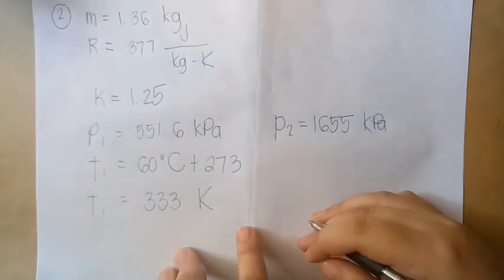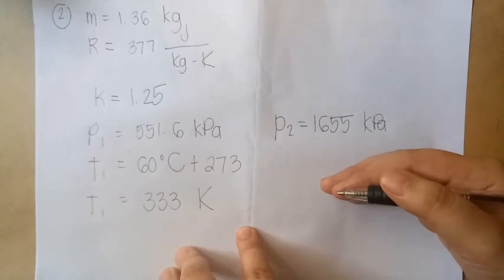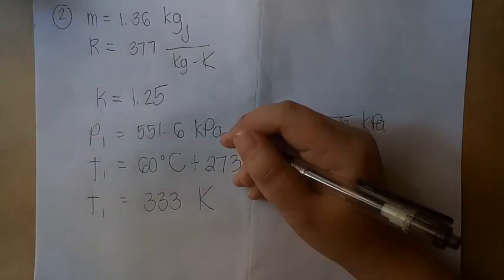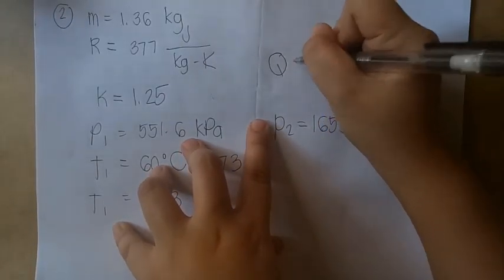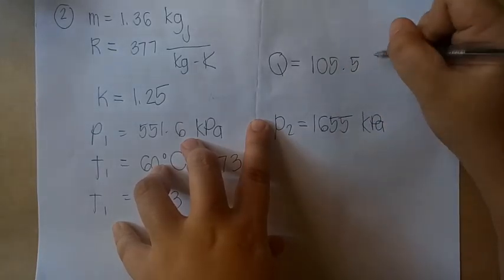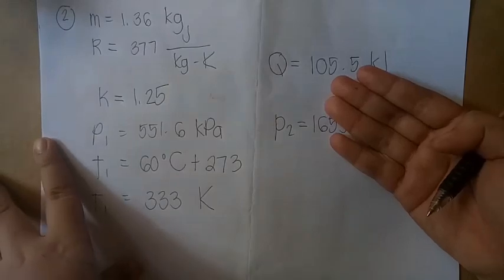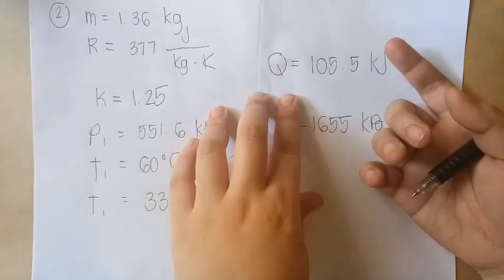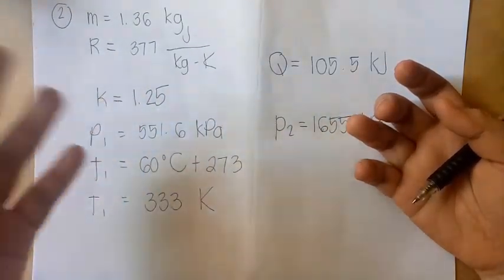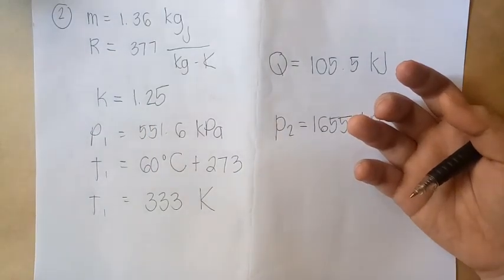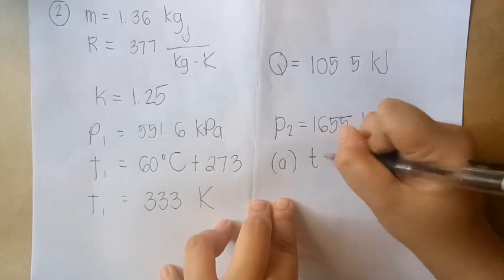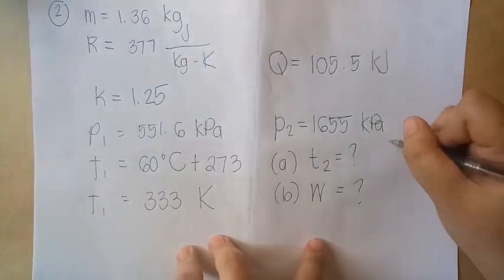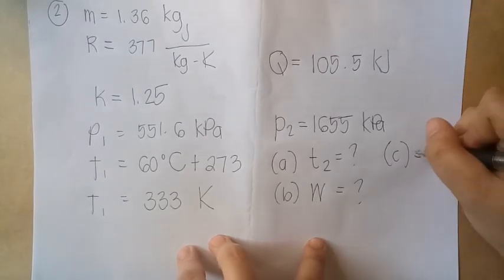During the process the gas is internally stirred and there are also added 105.5 kilojoules of heat. Q equals 105.5 kilojoules. Our Q is positive because it's added heat - when heat is added, absorbed, or gained, Q is positive; when rejected or lost, it's negative. The questions are: letter A, determine T2; letter B, the work input; and letter C, the change of entropy delta S.